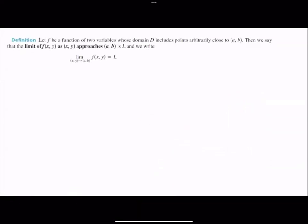What if we have a function in two variables? Suppose f is a function of two variables. The domain of the function is D, and it includes points that are close to the point (a, b). Please note that it is not just one value — here you have an ordered pair. Then we say that the limit of f(x, y) as (x, y) approaches (a, b) is l.